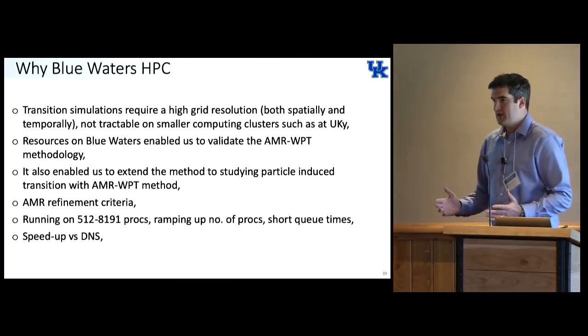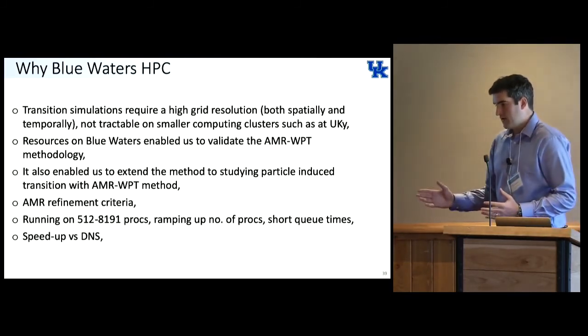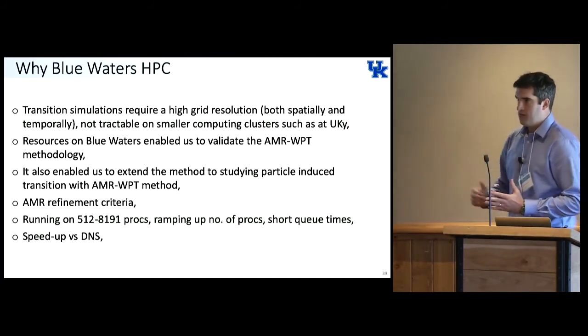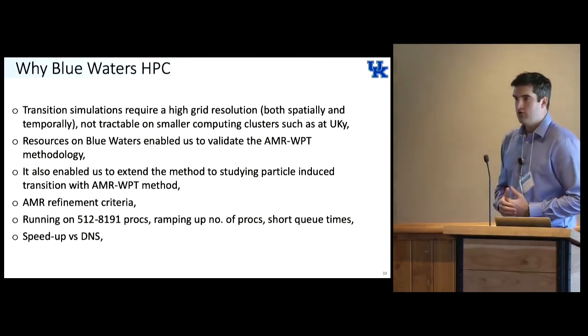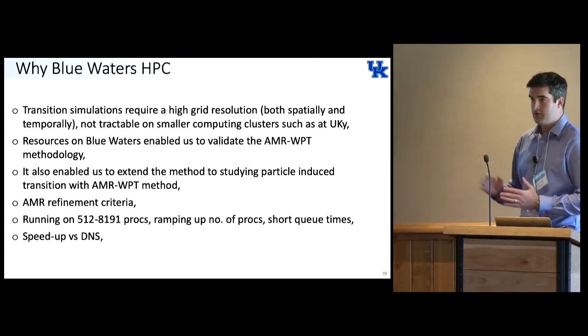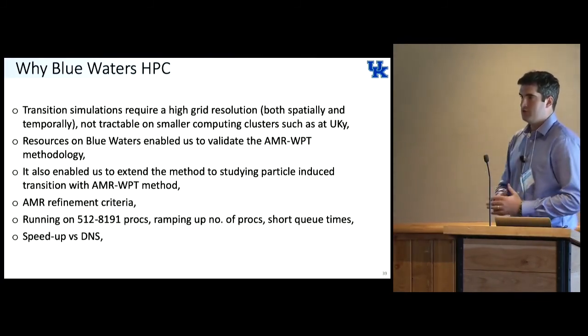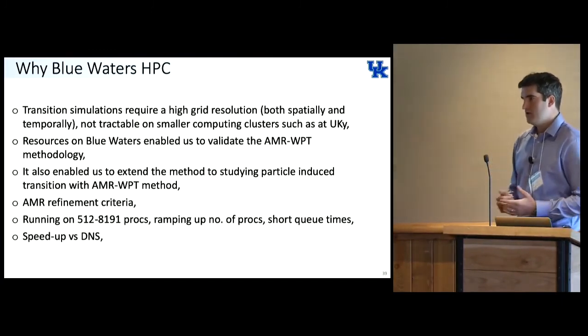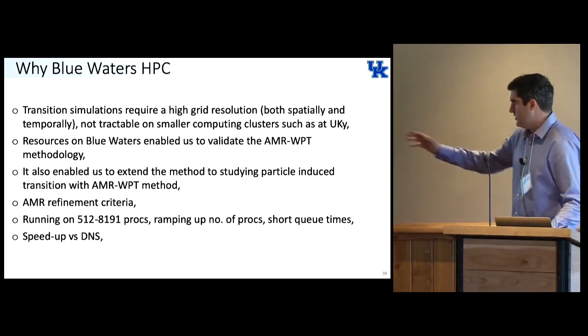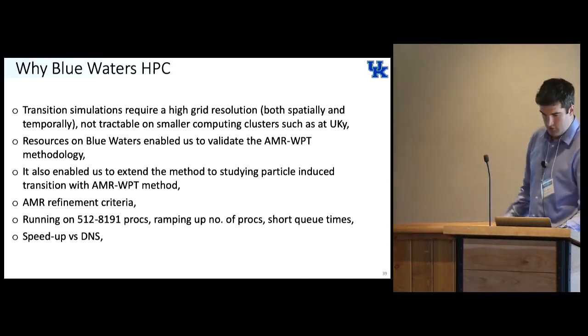The big thing is the speed up compared to DNS. Anecdotally, somebody told me that the data that I compared with took months and months and months to run. I used on the order of 700 million grid points, whereas the AMR, that particular case I showed, obviously it's AMR so it's a dynamic number of grid points, but on average was about 50, 60, 70 million. So it's a tenth. We were able to run that in less than a week. It was a big help. With the AMR, if I was running it and I could see something wasn't working, stop that and then we could try something else.